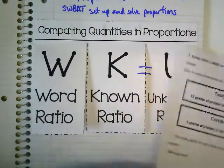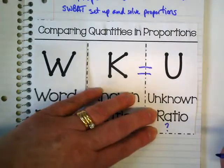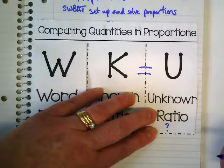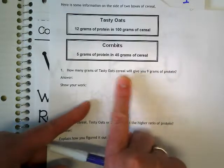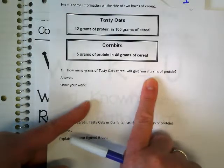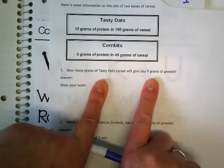And then the unknown ratio is always going to be where we have our question. This is where we know part of it, but we don't know all of it. The question asked, how many grams of cereal will give you 9 grams of protein? What do we know from the question?